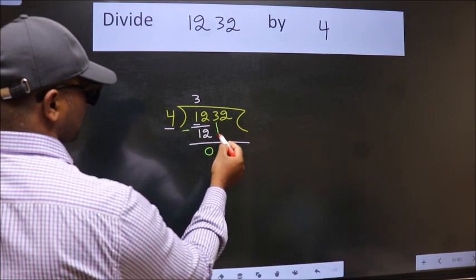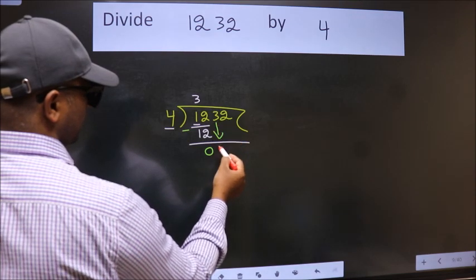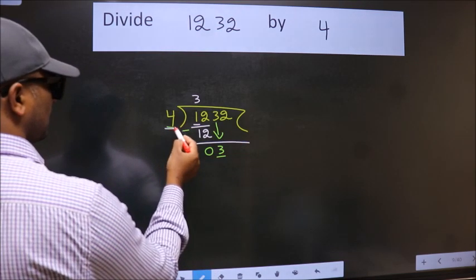After this, bring down the beside number, so 3 down. Now here we have 3, here 4.